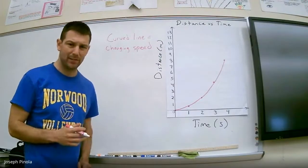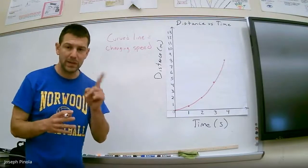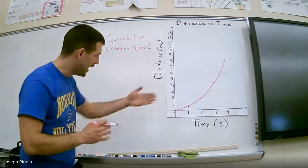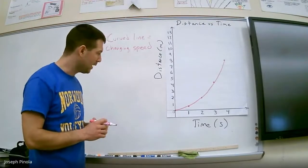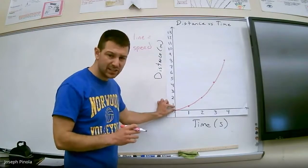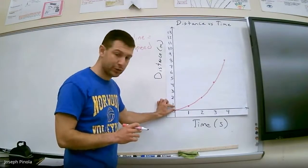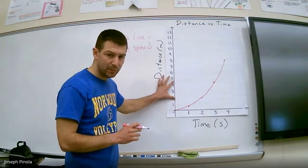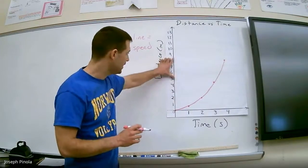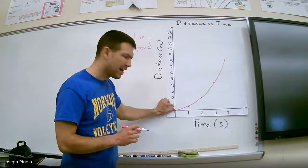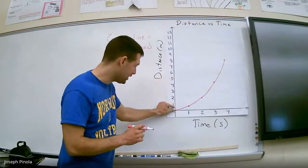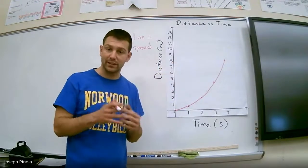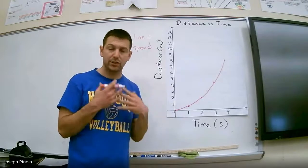So a curved line like the one we have here is going to mean that an object is changing its speed. But let's get more specific. The man in this problem was speeding up — his speed was increasing as he got faster. How could I tell that from the graph? After one second, he didn't cover that much distance. After two seconds, a little bit more. After three seconds, even more. And after four seconds, even more than that. He covers more and more distance every second. That makes sense — he's getting faster.